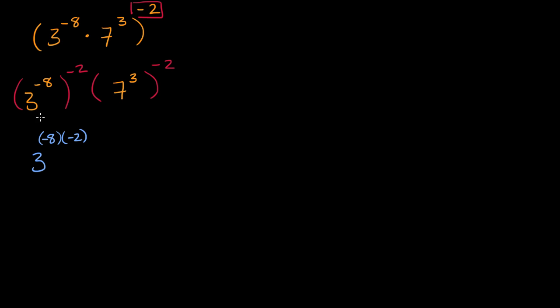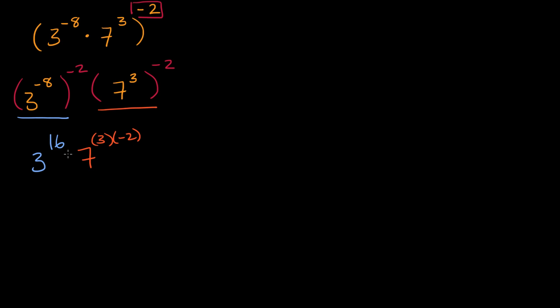Well, negative eight times negative two is positive 16. So this is going to be three to the sixteenth power right over there. And then this part right over here, seven to the third to the negative two, that's going to be seven to the three times negative two, which is seven to the negative six power.